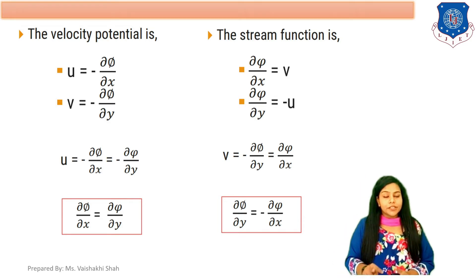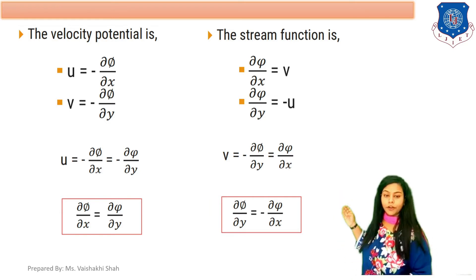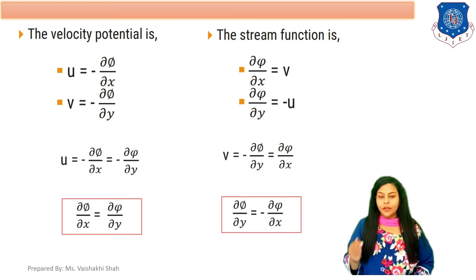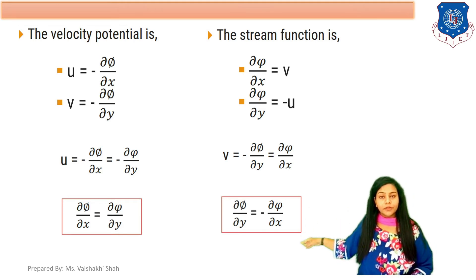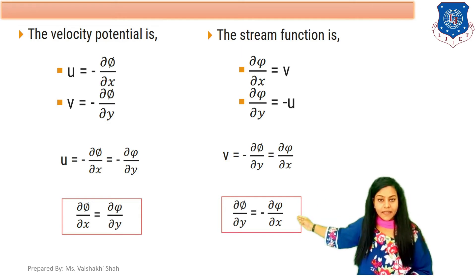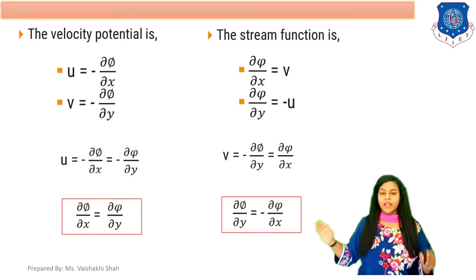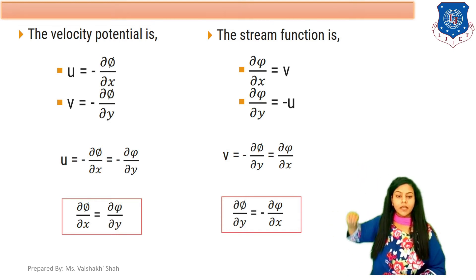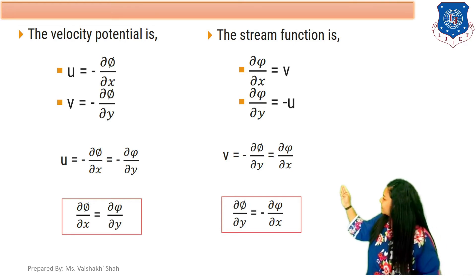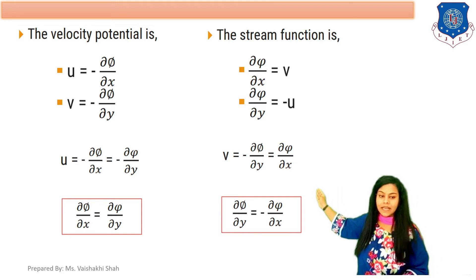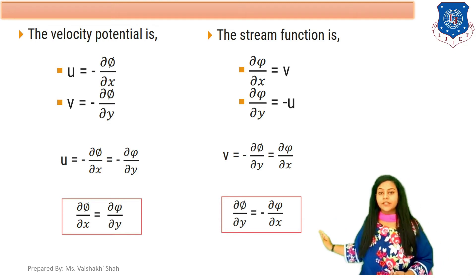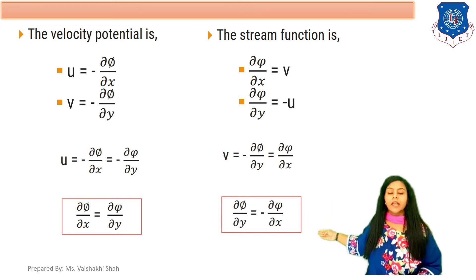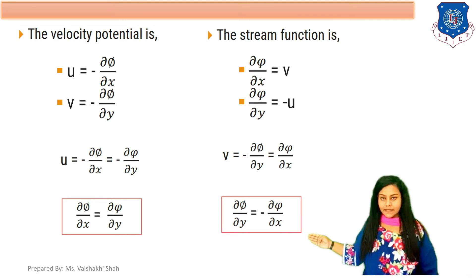Comparing both equations for u and v, we can prove a relationship: del phi by del x equals minus del psi by del y, and del phi by del y equals minus del psi by del x — wait, more precisely: del phi by del x equals minus del psi by del y, and del psi by del x equals minus del phi by del y. These relationships are very important for solving examples.